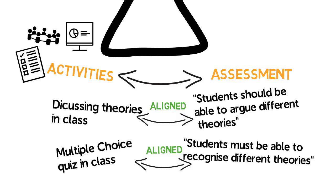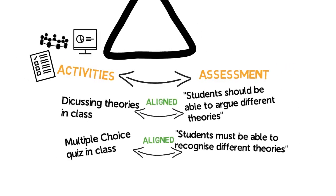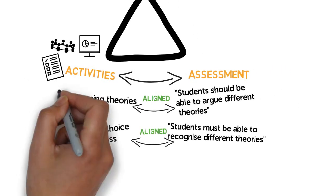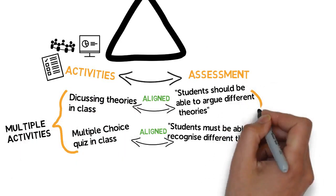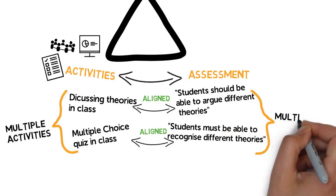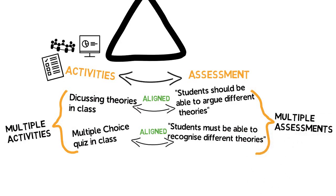Usually, there are multiple learning objectives for one course, focusing on different levels of cognition. This implies that you will probably need multiple types of activities and possibly even multiple methods of assessment to ensure complete constructive alignment.